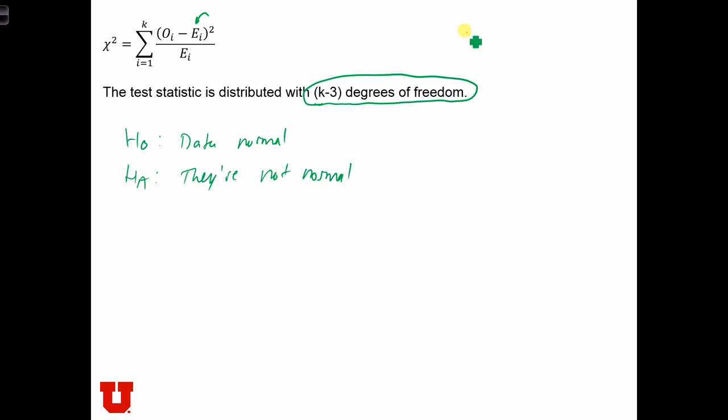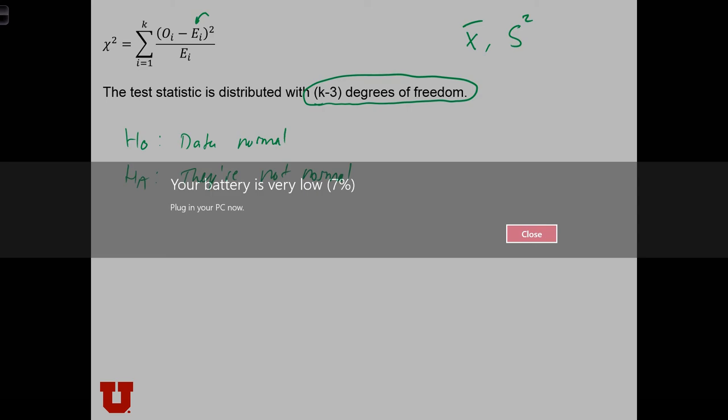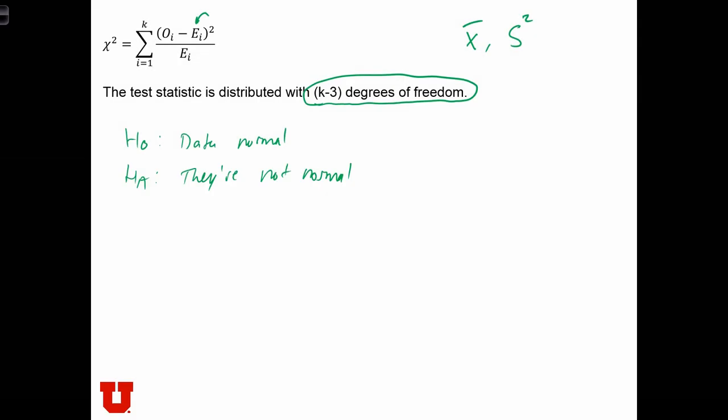And the reason is that we've used up a degree of freedom when we calculated x-bar and the sample variance from our sample. That's a little bit complicated for you to understand right now, but just know that we are going to use k minus 3 degrees of freedom.